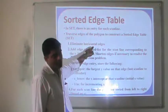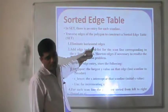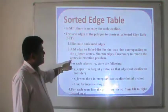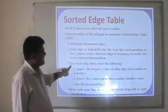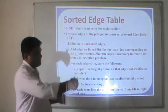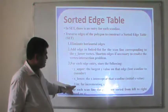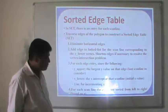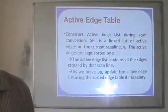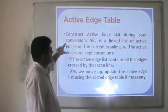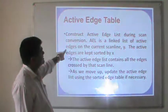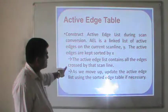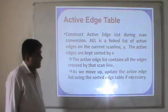Once we have found the points, we create a sorted edge list which stores information about points already listed and pending points. Eliminate horizontal edges, since the scanline will just touch those positions. Add each edge to the linked list for the scanline corresponding to the lower y vertex. For each edge, store: y_upper (the largest y value), x_lower (the intercept), and 1/m for incrementing x, so xk+1 = xk + 1/m. Construct an active edge list — a linked list of active edges on the current scanline, sorted by x.